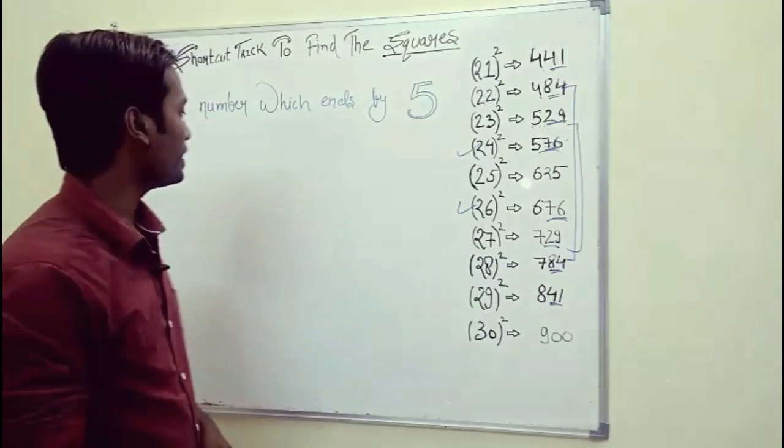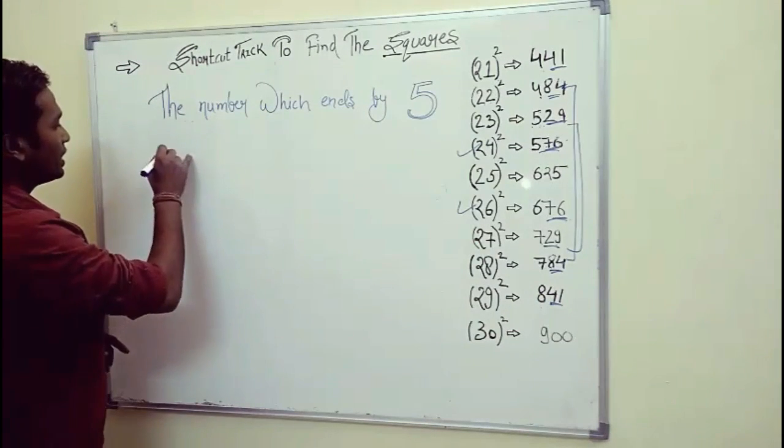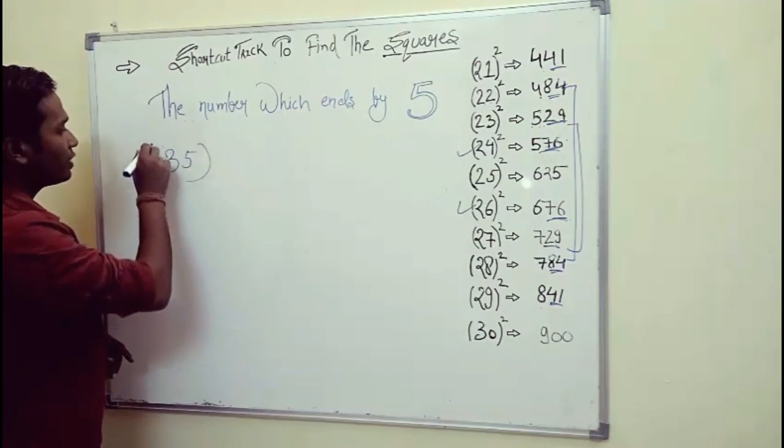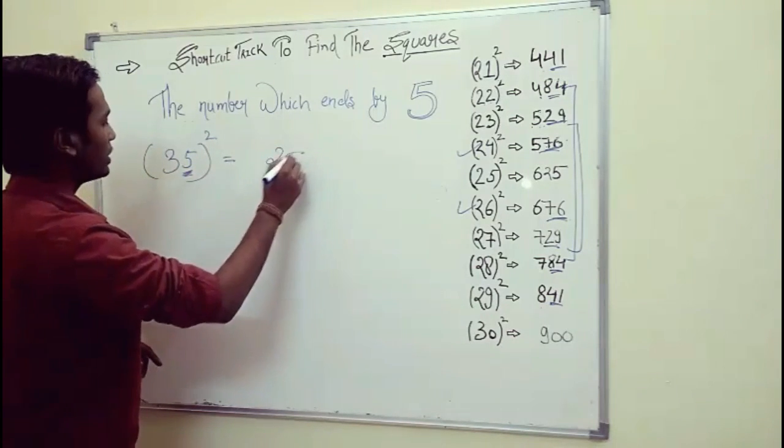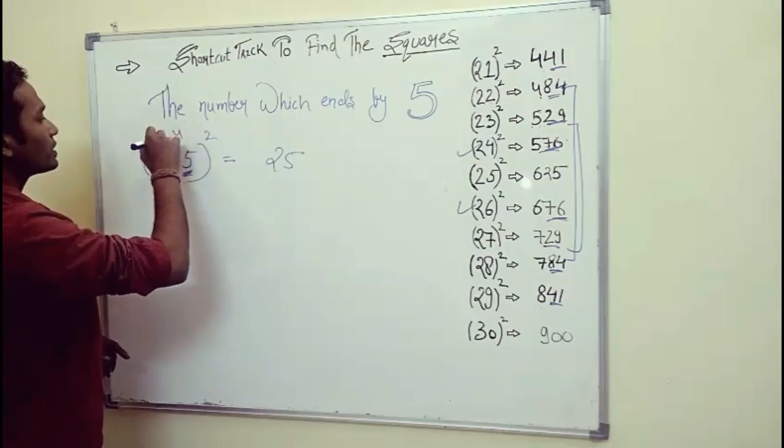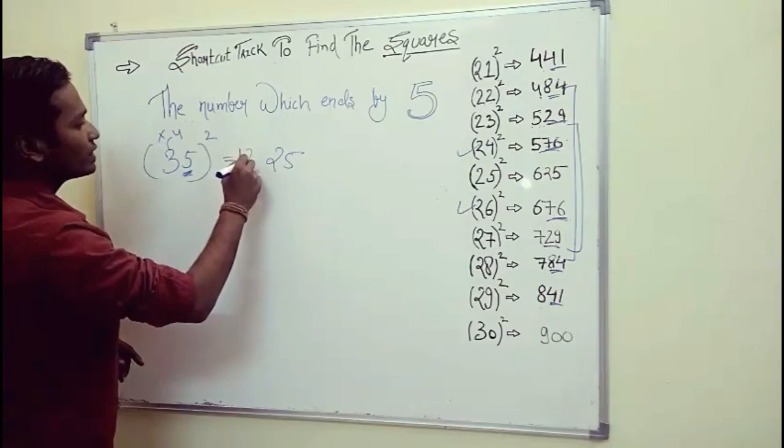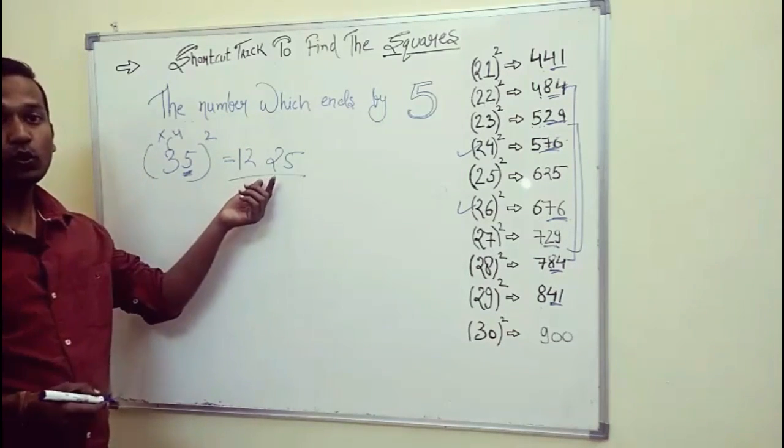First, we take those numbers which end by 5. So for example, let's have 35. So what we have to do? 5 squared is 25, and 3 multiplied by its consecutive number 4 is 12. So the answer is 1225.